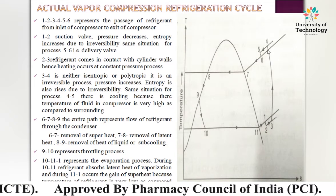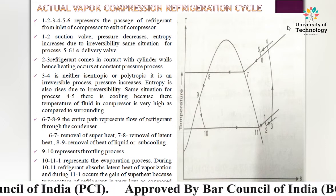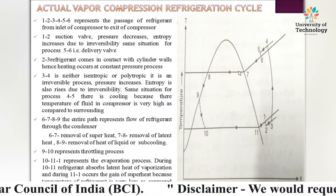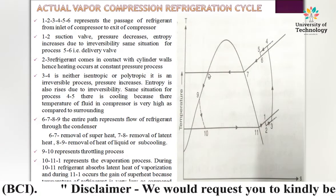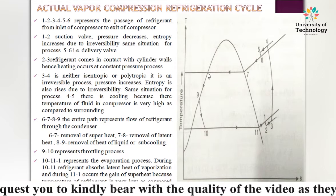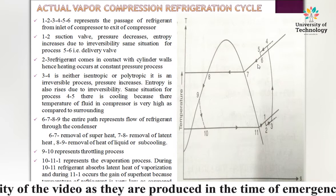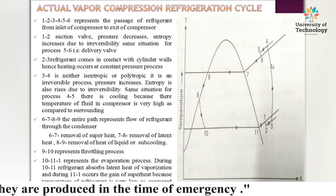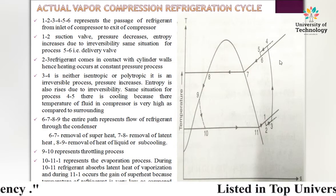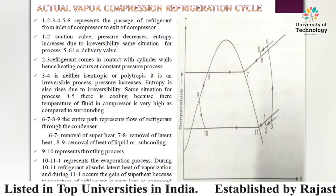From 7→8, heat is removed as saturated vapour is converted into saturated liquid — this is the removal of latent heat, i.e., the condensation process. From 8→9, additional heat is removed due to subcooling of the liquid refrigerant.